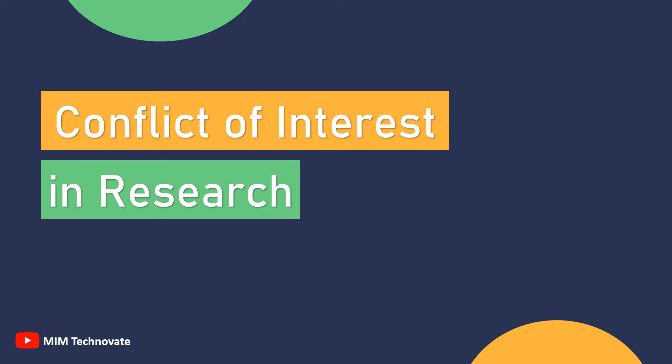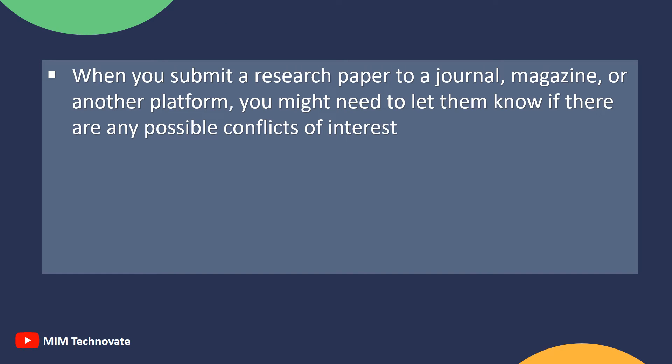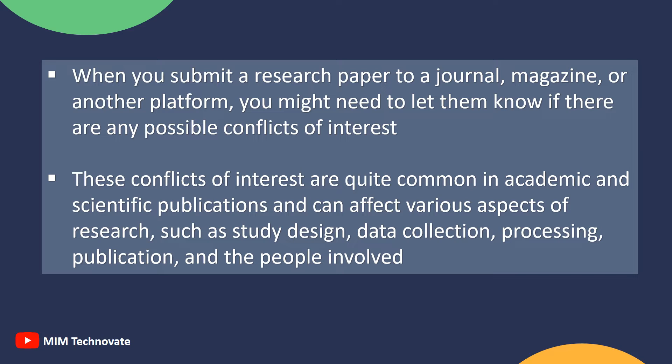Conflict of Interest in Research. When you submit a research paper to a journal or another platform, you might need to let them know if there are any possible conflicts of interest. These conflicts of interest are quite common in academic and scientific publications and can affect various aspects of research, such as study design, data collection, processing, publication, and the people involved.